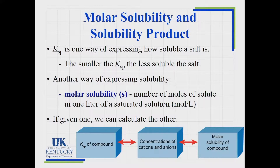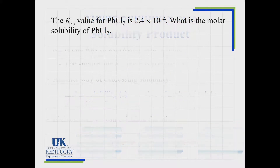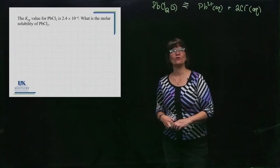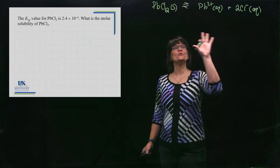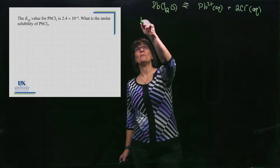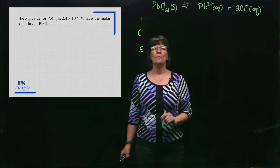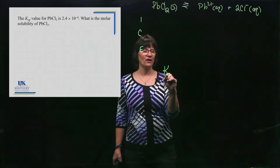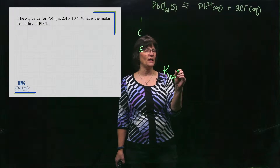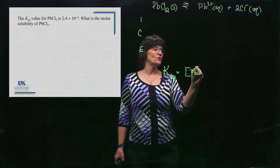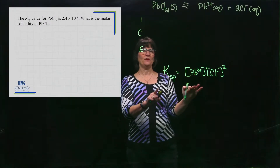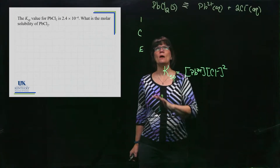Lead chloride is our salt. I've written the reaction on the board and given you a value for KSP — I'm asking for the molar solubility. The first thing to always do when there's a calculation involved is write the K expression. In this case it's called KSP, and it would be the lead concentration times the chloride concentration squared. Make sure you don't skip this step.